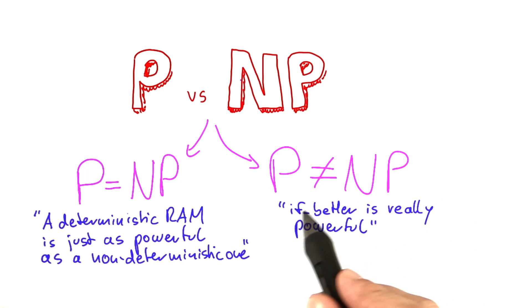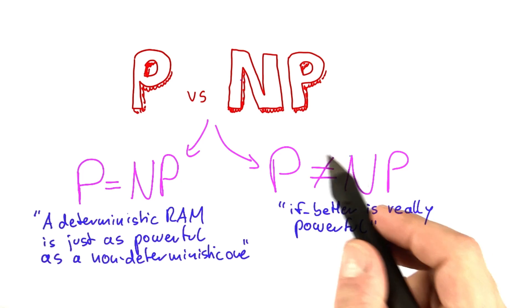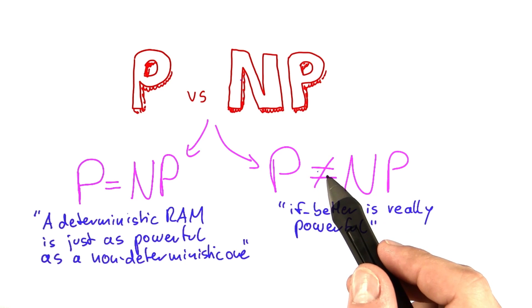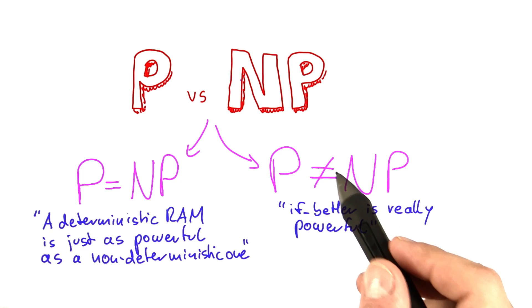Now, given how powerful this if-better function is—remember when I introduced it to you, it seemed like this magic function that could solve all of our problems—many computer scientists nowadays believe that P does not equal NP, but nobody has been able to prove it.